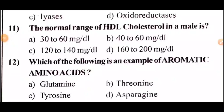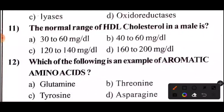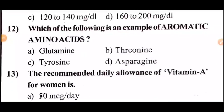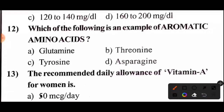Question 11: The normal range of HDL cholesterol in males. Options A, B, C, D — guess in 5 seconds. Answer: The normal range of HDL cholesterol in males is option B, 42–60 mg.